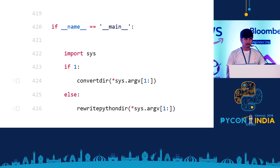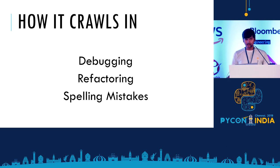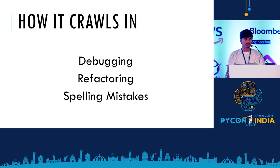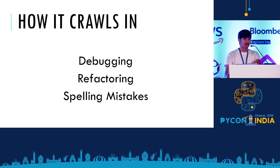You might be wondering: what are all the other ways dead code might crawl into your project? A couple of prominent ones: first, debugging. When you're debugging software, you need to define some extra variables, or maybe you have a function where you pretty-print something. Then whenever the tests start passing, you might just do 'git commit -am done' — and there, ladies and gentlemen, you introduce dead code. Another one is refactoring — you tweak and optimize things and leave traces of the old code. There are also spelling mistakes which can lead to dead code.